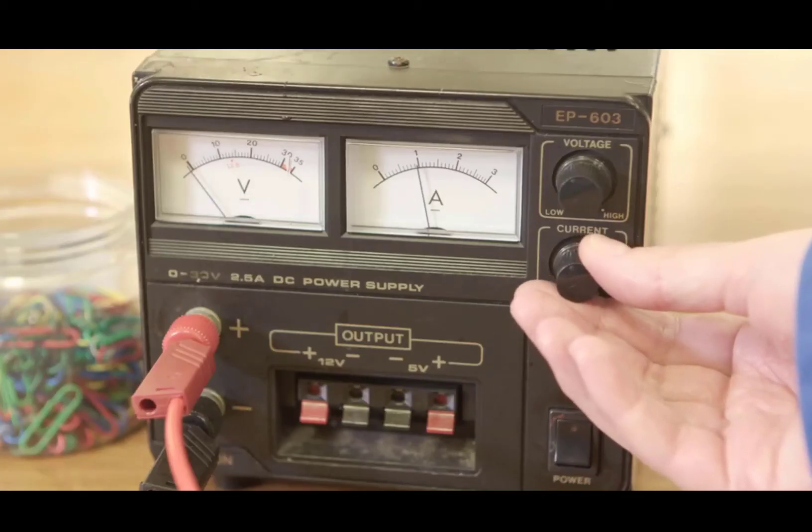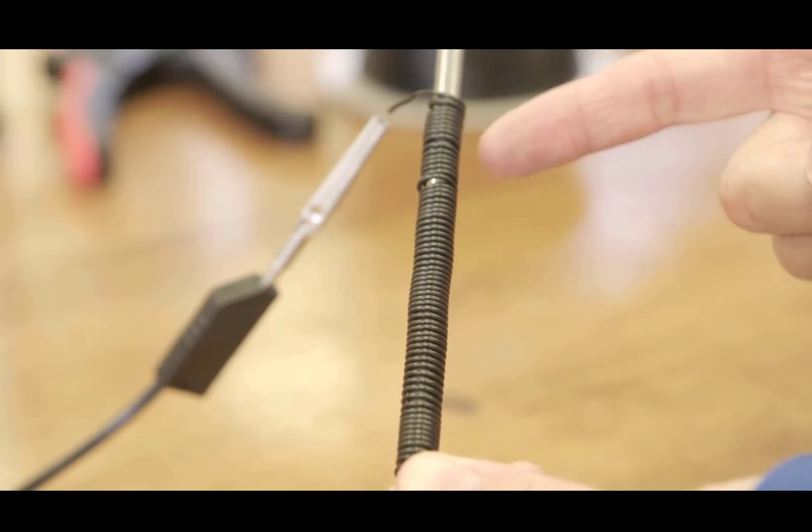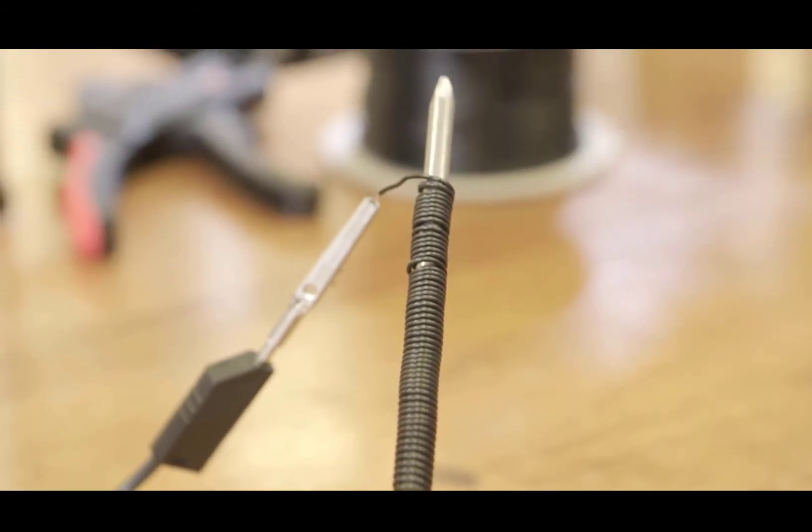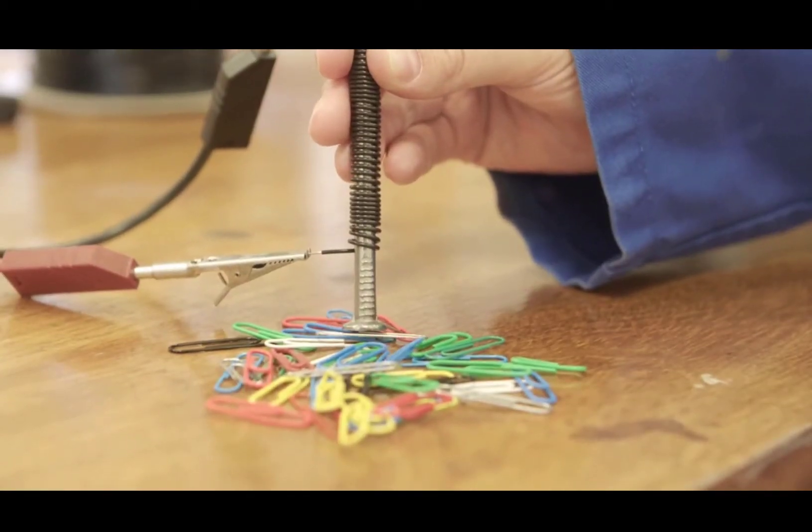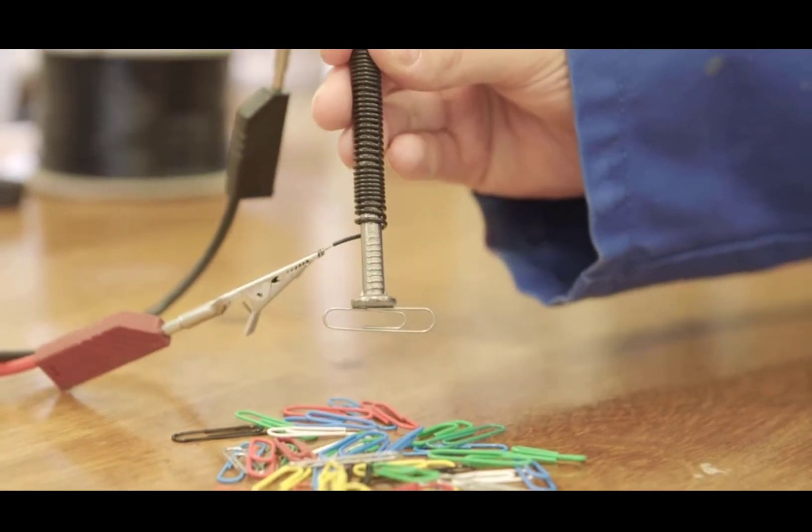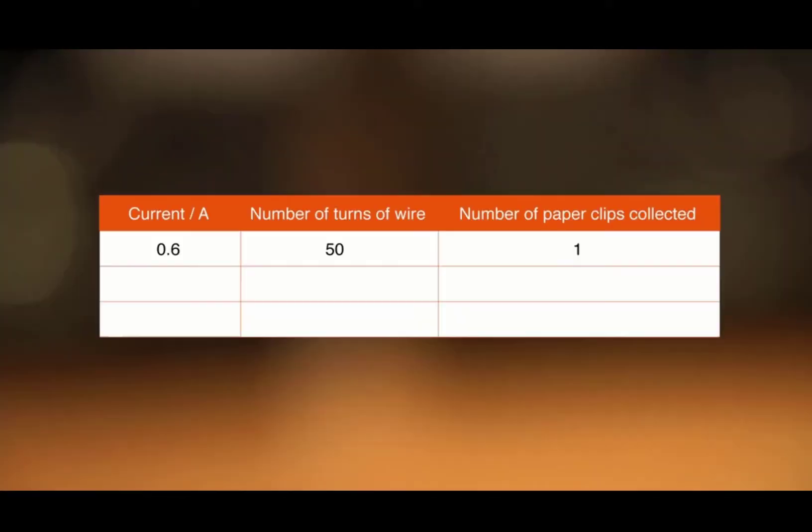The variables that are going to be changed are the current and the number of turns of wire. So that there is a control measurement, the electromagnet strength with 50 turns of wire is tested. The number of paper clips collected in the control is recorded in a table for comparison.